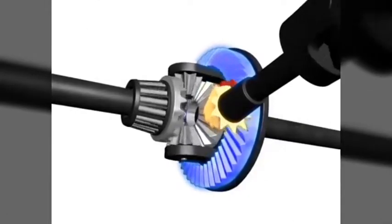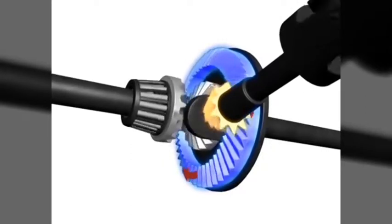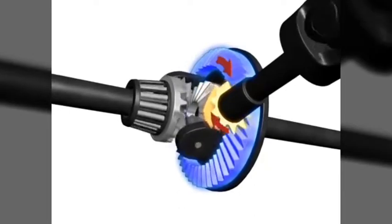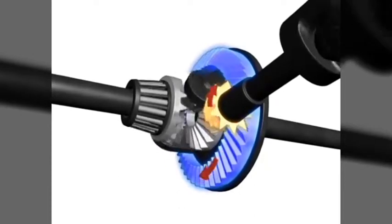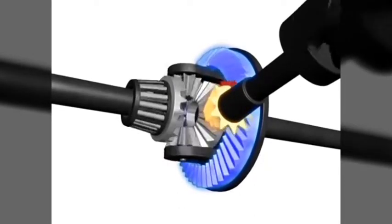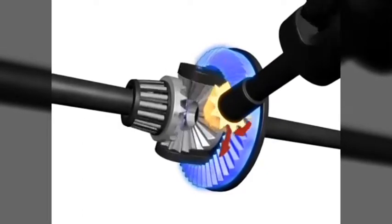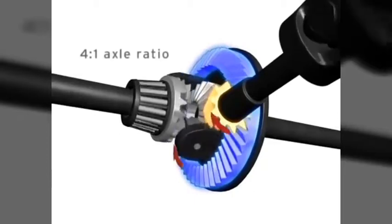Notice that the pinion gear turns at a different speed than the ring gear. The ratio between these two gears is called the axle ratio. In this example, the ring gear turns one time for every 4 revolutions of the pinion gear. This axle would be said to have a 4 to 1 ratio.